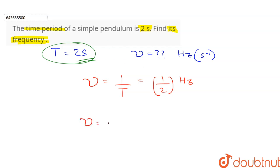1 by 2 can be written as 0.5 Hertz, or we can write 0.5 per second. So in one second, the simple pendulum completes half an oscillation.